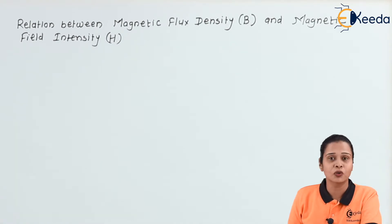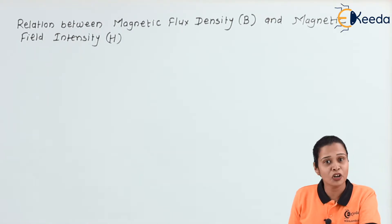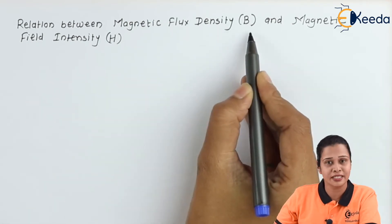Here, we know magnetic flux density is nothing but magnetic flux per unit area. Means the number of lines passing through unit area. That is magnetic flux density.